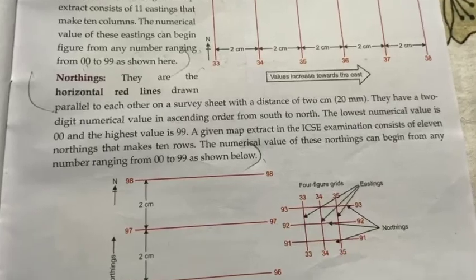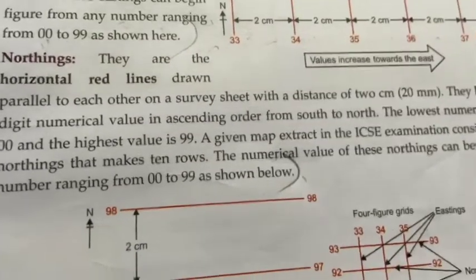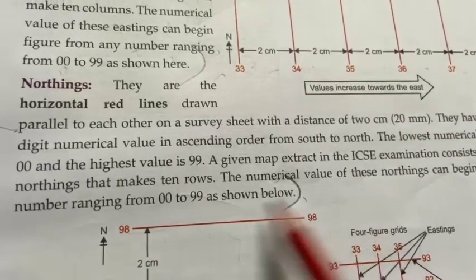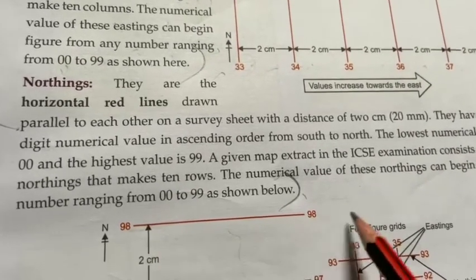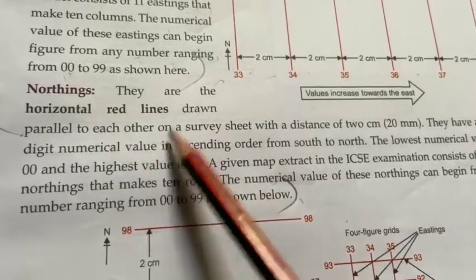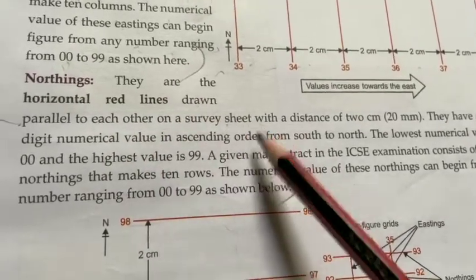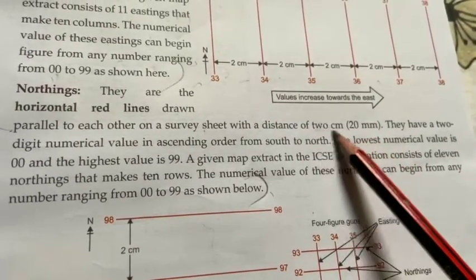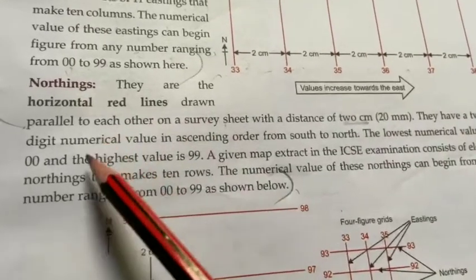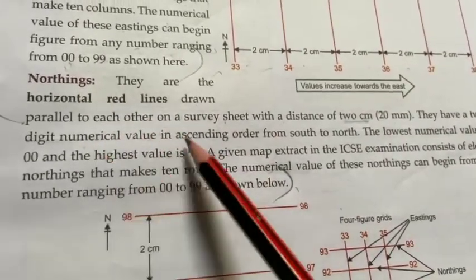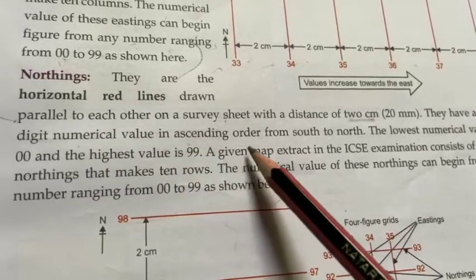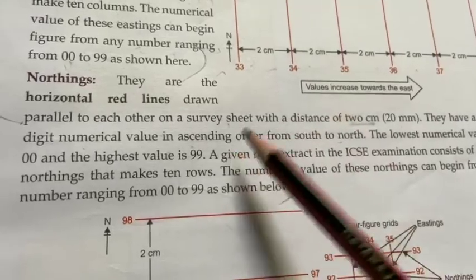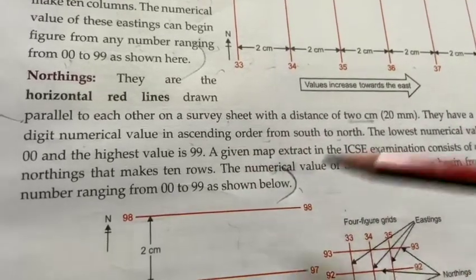Northings क्या होती हैं? Northings are red horizontal lines — red color से drawn होती हैं, एक दूसरे के parallel होती हैं। इनके बीच में भी 2 cm का difference होता है, मतलब 20 mm। They have a 2-digit numerical value in ascending order from south to north — south से north की तरफ ascending order में।